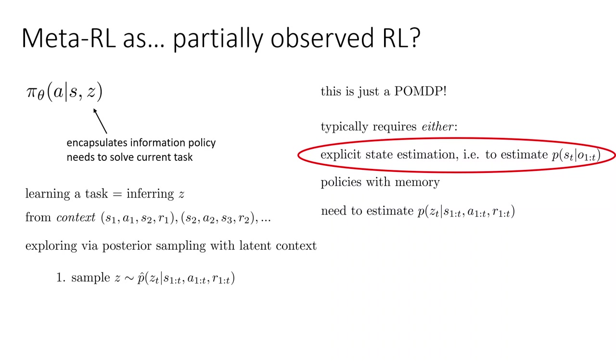So the procedure will be to sample Z from your belief about Z, given your history. And that will use some approximate posterior trained with variational inference, then act according to pi theta A given S comma Z to collect more data, basically act as though Z was correct, and then repeat this process. And meta training will consist of training pi theta and training your variational approximation to the state estimate.